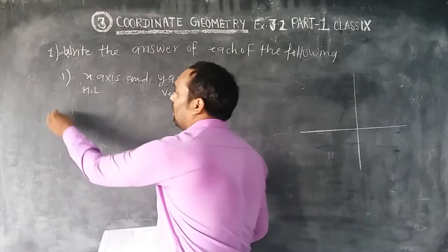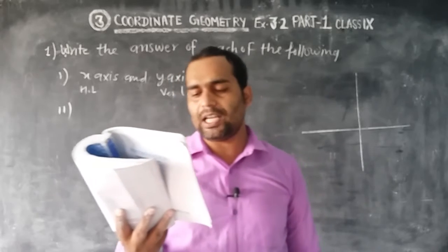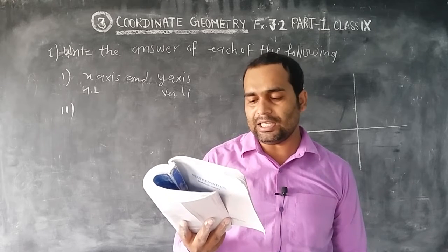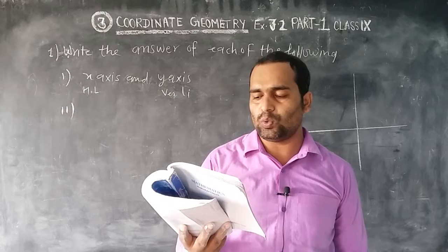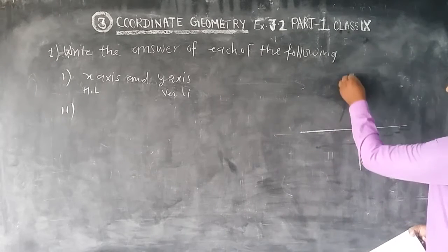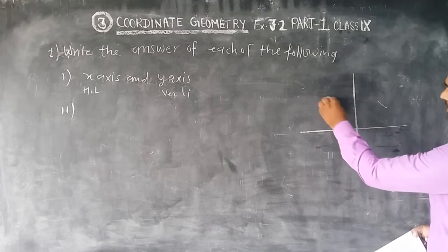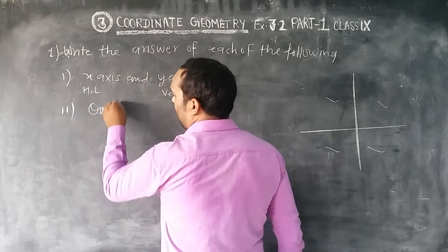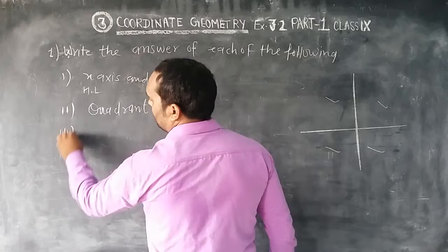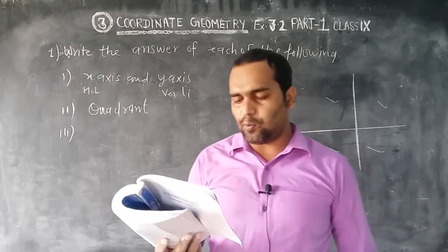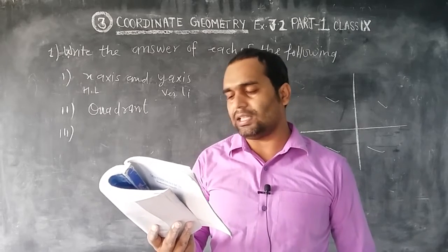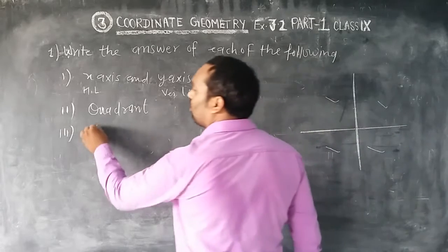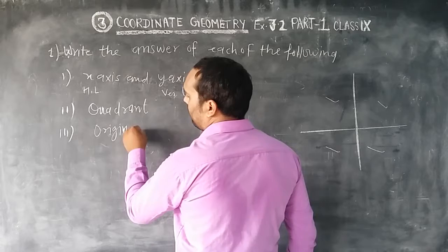Number second: what is the name of each part of the plane formed by these two lines? When both lines intersect, the plane is divided into four parts, and these four parts are called quadrants. Number third: write the name of the point where these two lines intersect — that point is called the origin.